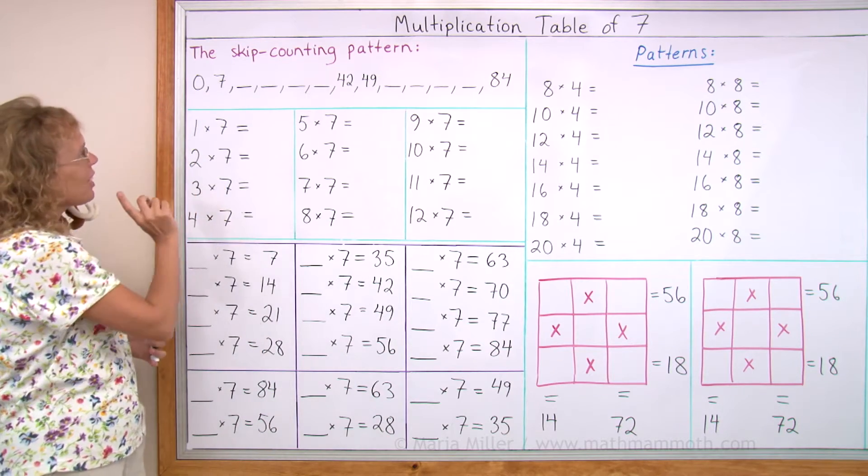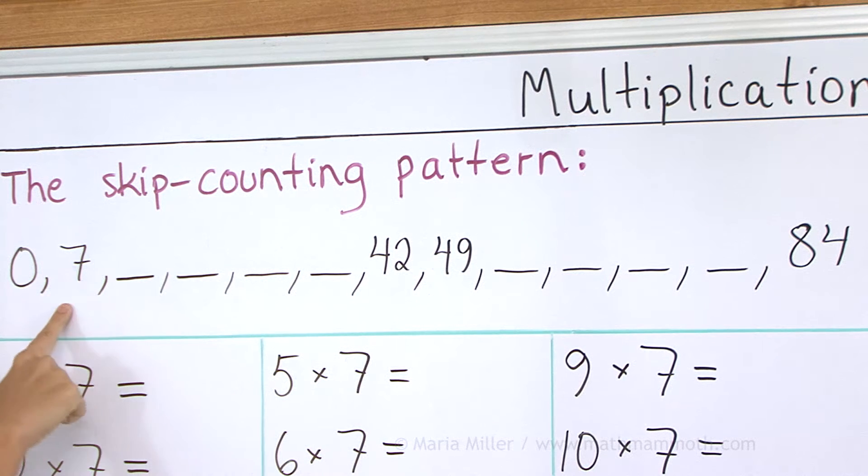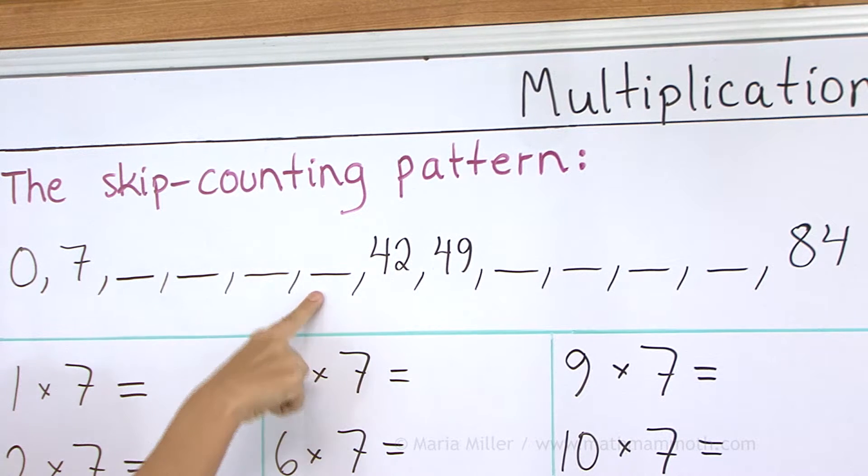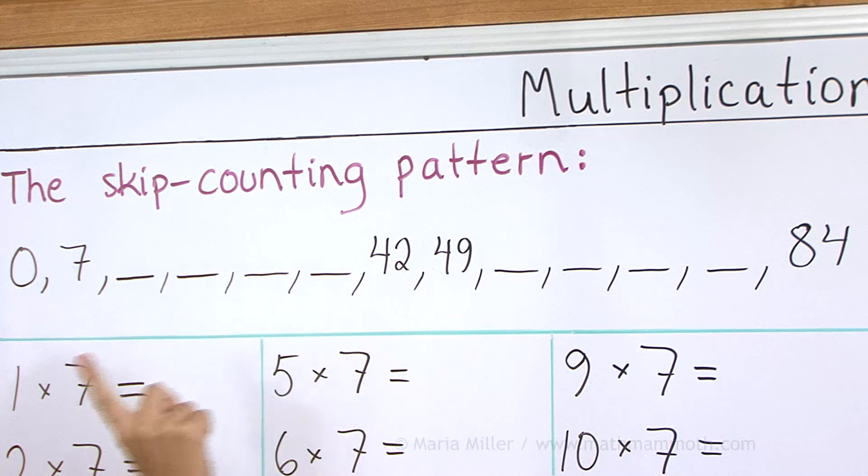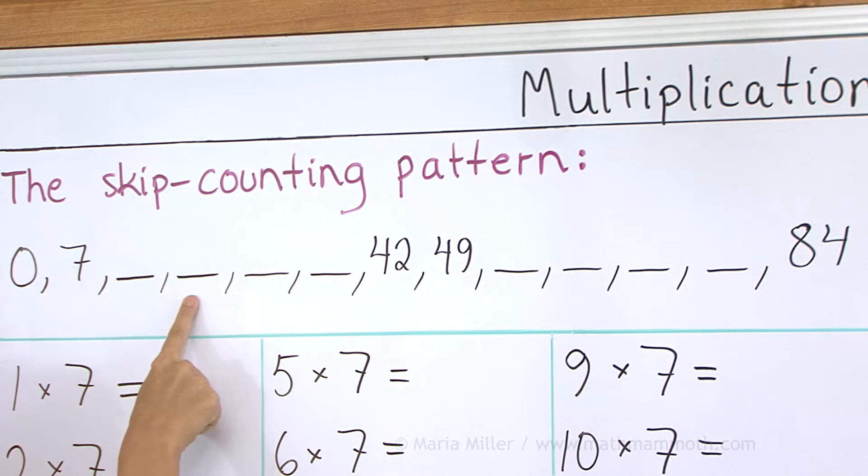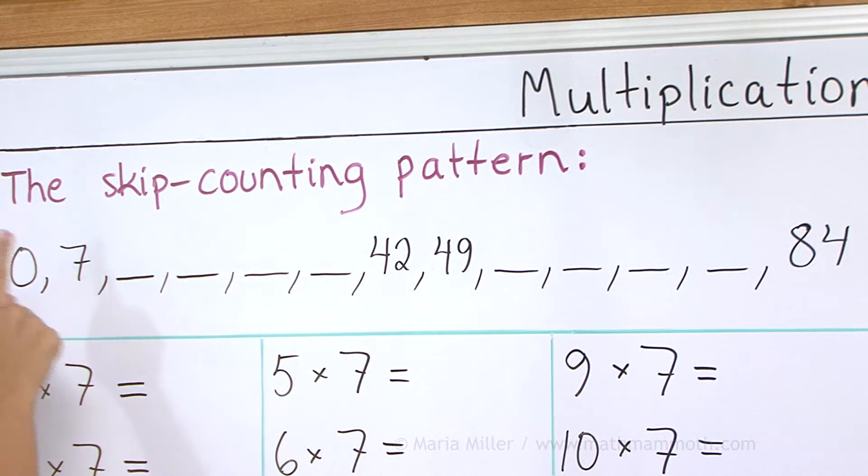It goes like this: 0, 7, 14, 21, 28, 35, 42. Again, 0, 7, 14, 21, 28, 35, 42. Your turn, 0, 7...